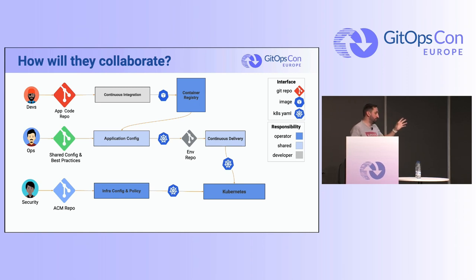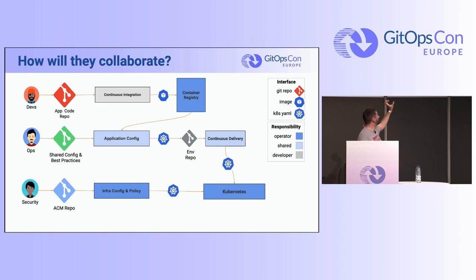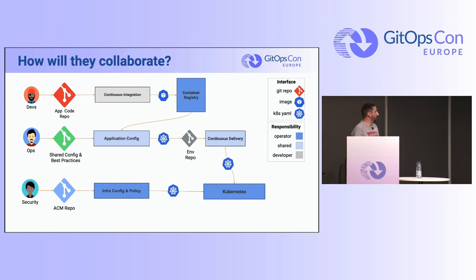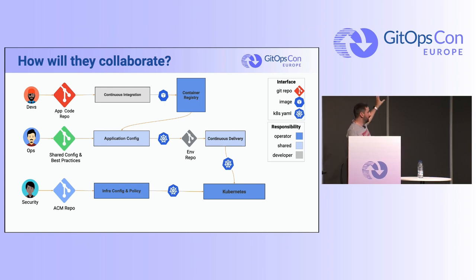Ops create application config because developers don't use resource requests or limits on Kubernetes, and don't know how to use monitoring, logging, or alerting. So the ops team creates best practices in a repo and application configs in another repo — one per environment — because running in non-production vs. production means different clusters, different environments, and different configuration. The security team creates network policies using Kyverno or Open Policy Agent.